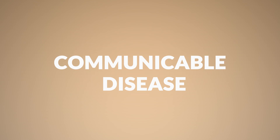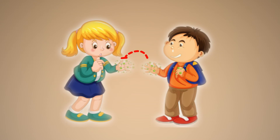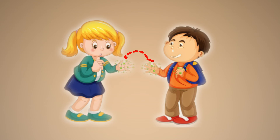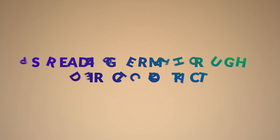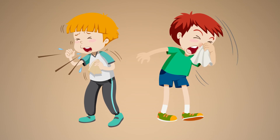Now it's the turn of communicable diseases — diseases that spread from one person to another. These are usually caused by germs, which are disease-causing microbes. There are a few types. Spreading germs through direct contact: when a person sneezes or coughs in a public place, germs released in the air can affect a healthy person and can be even more dangerous to an unhealthy person.